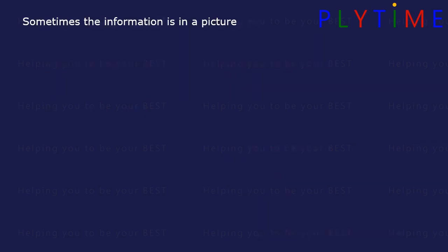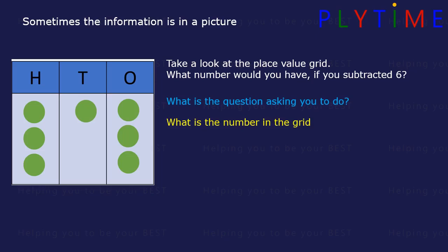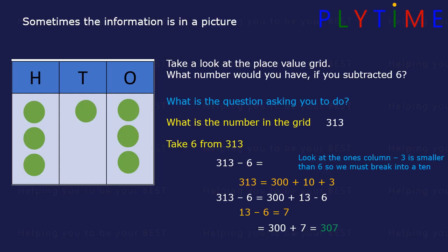Sometimes the information is in a picture. Take a look at the place value grid. What number would you have if you subtracted six? Find the number in the grid — there are three hundreds, one ten and three ones, so it's three hundred and thirteen. Now take six from three hundred and thirteen. We can see in the ones column three is smaller than six, so we break into a ten. Three hundred and thirteen is the same as three hundred plus ten plus three. So three hundred and thirteen minus six is three hundred plus thirteen minus six. We can do thirteen minus six, that equals seven. So we're left with three hundred plus seven, which equals three hundred and seven.